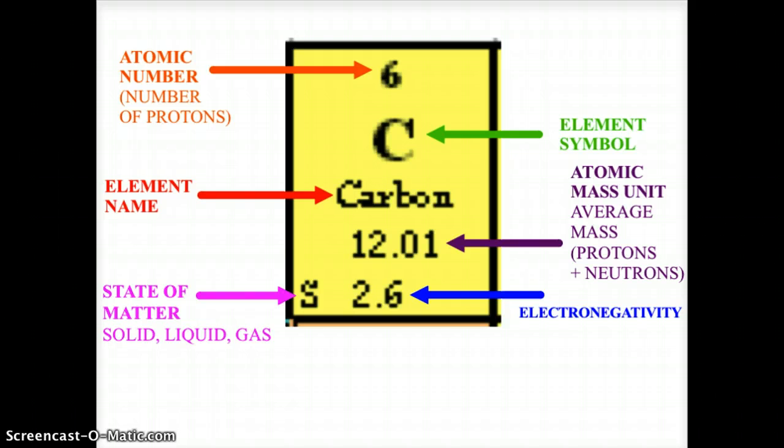But typically, round off to the whole number, and protons plus neutrons will equal the atomic mass. So for carbon, we would round the 12.01 to 12. Since there are six protons based on the atomic number, that would mean we would need six neutrons.